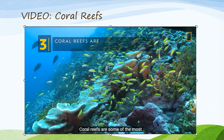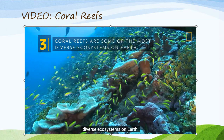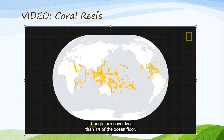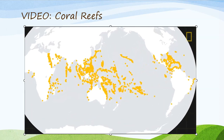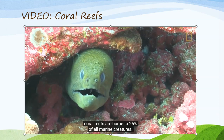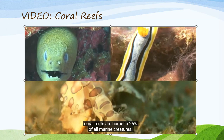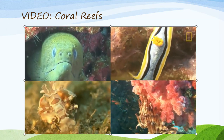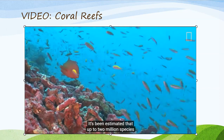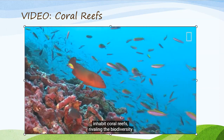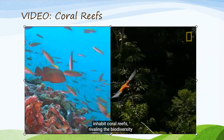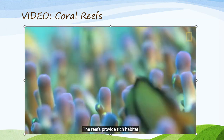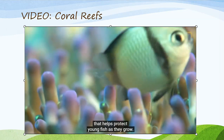Coral reefs are some of the most diverse ecosystems on Earth. Though they cover less than 1% of the ocean floor, coral reefs are home to 25% of all marine creatures. It's been estimated that up to 2 million species inhabit coral reefs, rivaling the biodiversity of the rainforest. The reefs provide rich habitat that helps protect young fish as they grow.